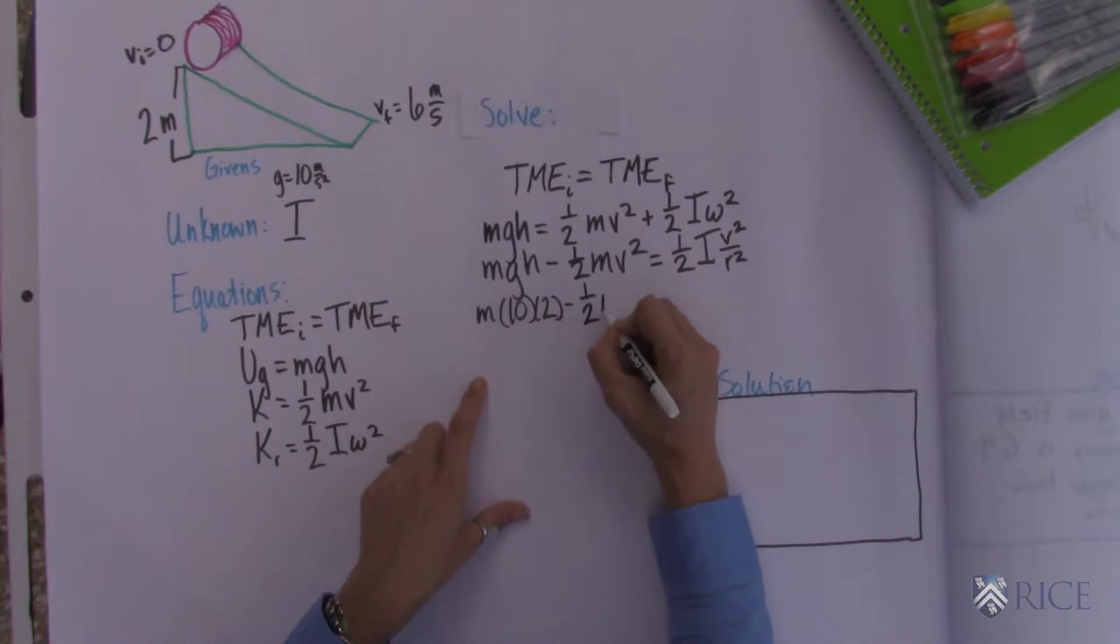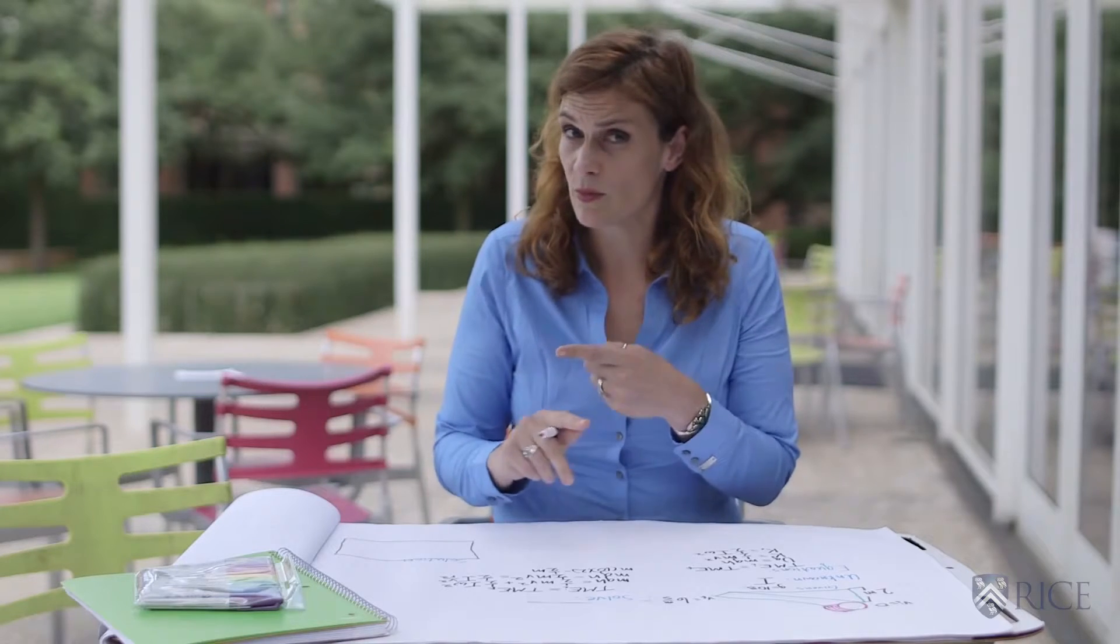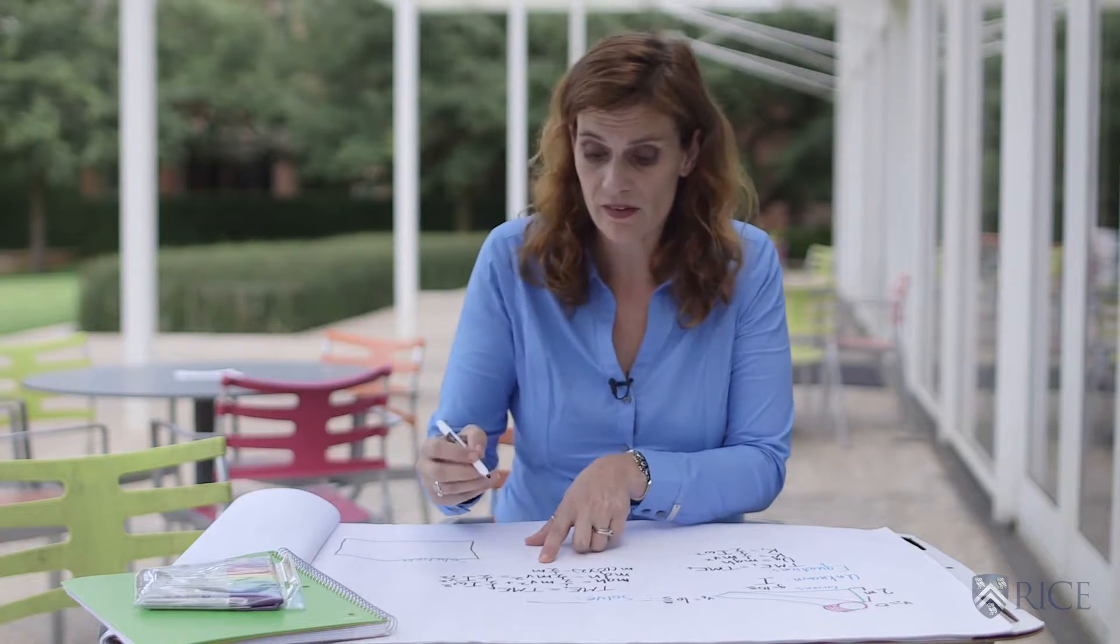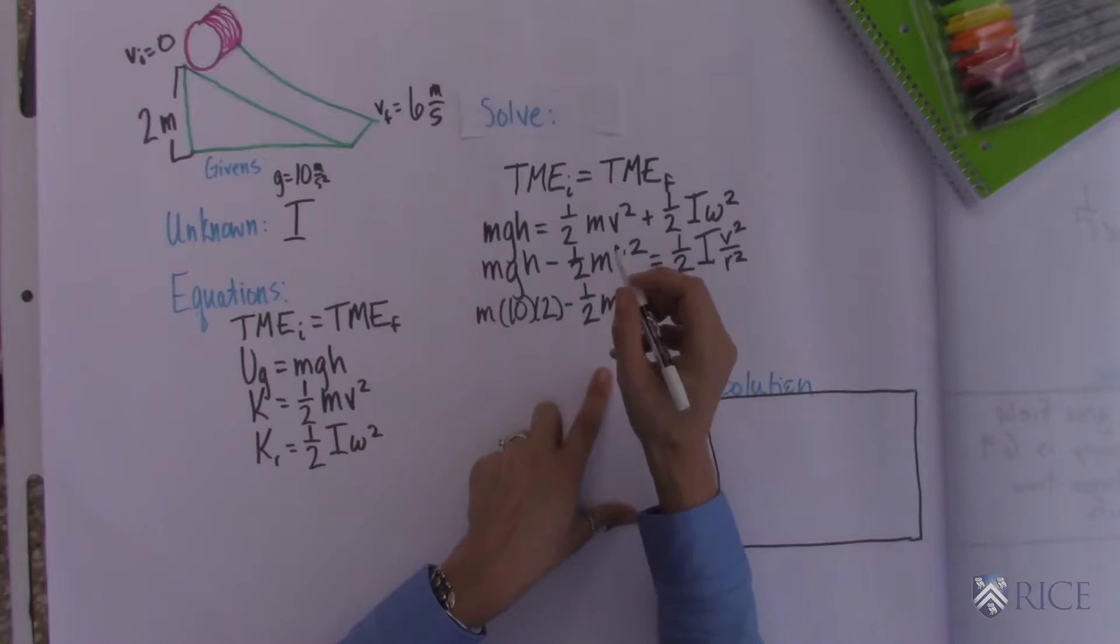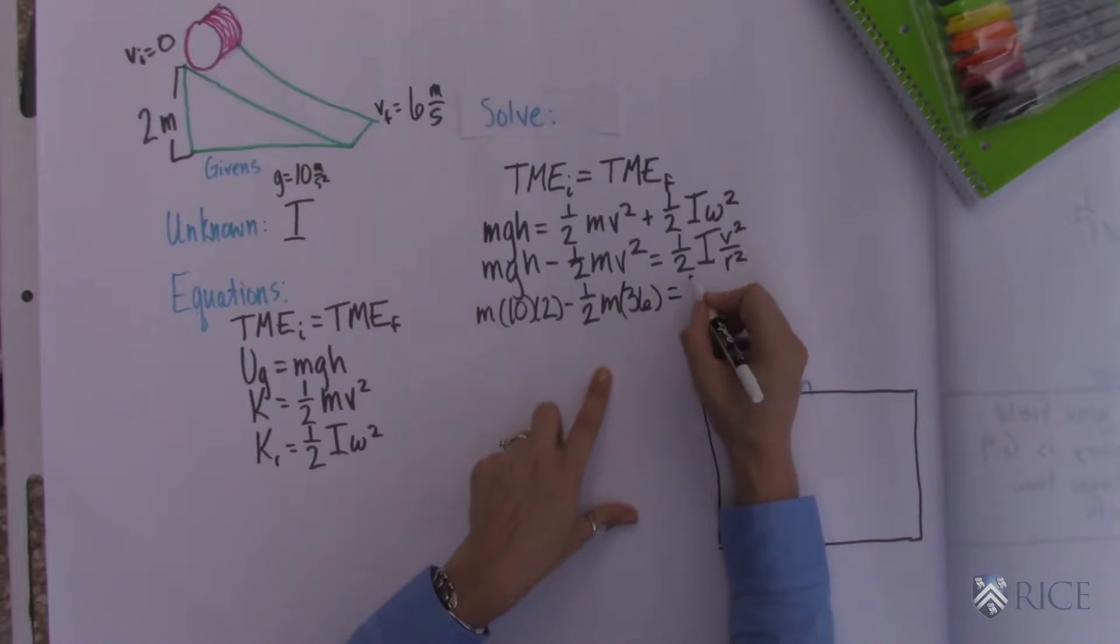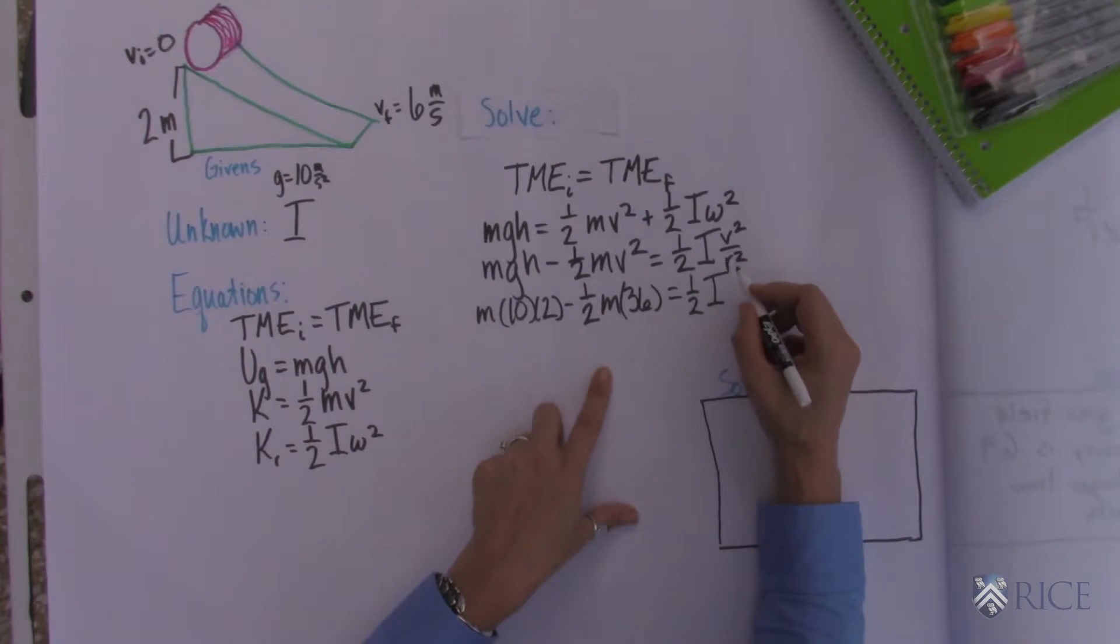We know we're supposed to get our answer in multiples of m and r, so it's okay if we leave those. v is 6. So that is 36. So that is 36 over r squared.